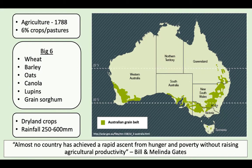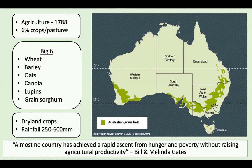Grains are grown along this darker green region at the bottom of the country and also in areas within Tasmania — dryland crops with a very set amount of rainfall and in a cooler climate. I put a quote here by Bill and Melinda Gates: 'Almost no country has achieved a rapid ascent from hunger and poverty without raising agricultural productivity.' The global population is growing exponentially and we face a real issue feeding this growing population.